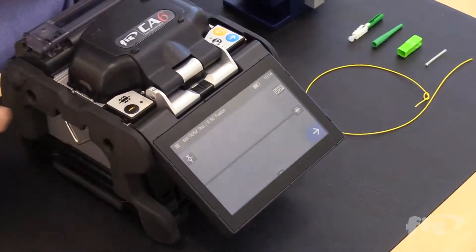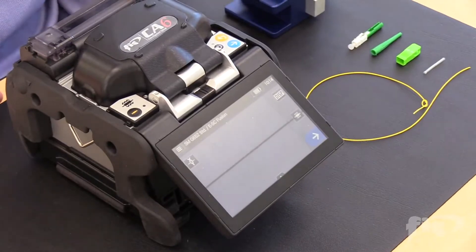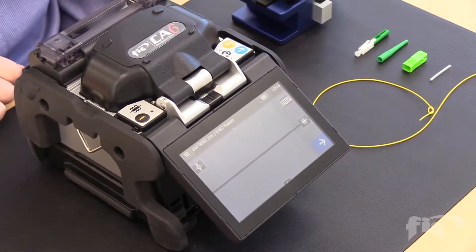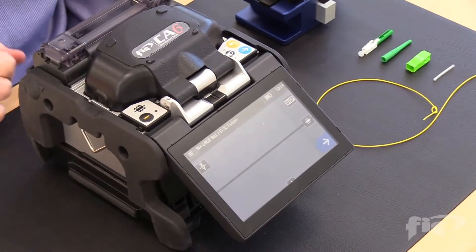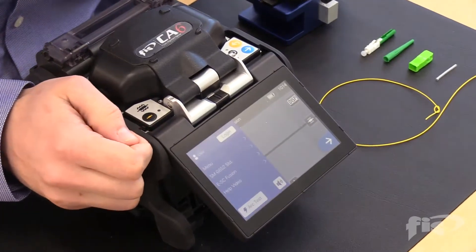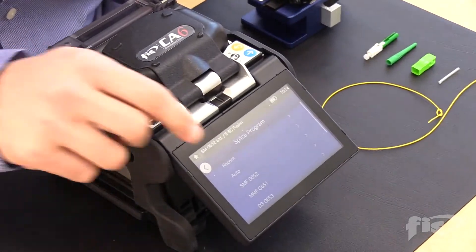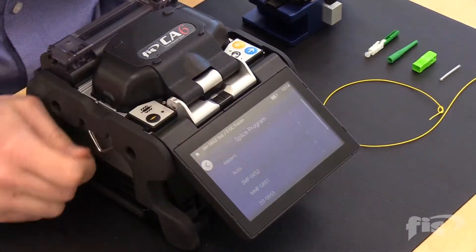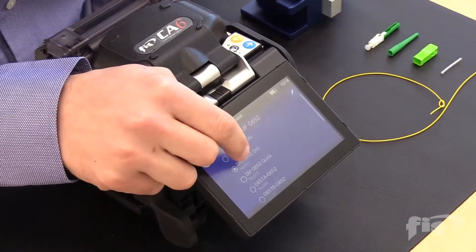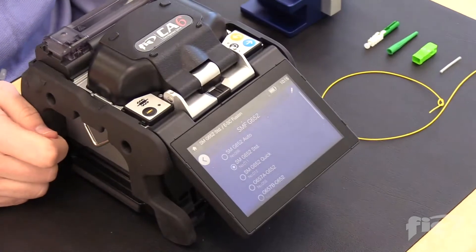Click the menu icon to get back to the main screen. Now, click on the menu icon and select Single Mode G.652 Standard. Single Mode Fiber G.652 and Single Mode G.652 Standard.